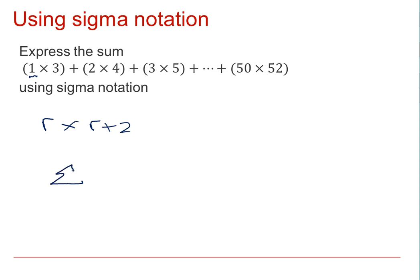Using the sigma notation, we can see that we are starting at R equals 1, and then R goes up to the value of 50. And the expression that we are actually summing is R times R plus 2.